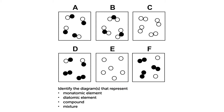Now let's test your understanding of what we have covered so far. For each of these representations A to F, can you identify the diagrams that represent: a monoatomic element, a diatomic element, a compound, and a mixture? Pause the video and think through this.